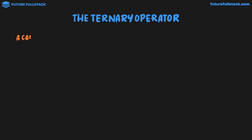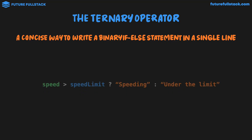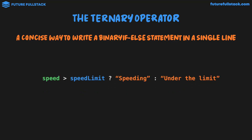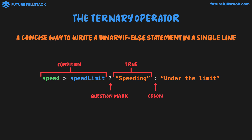The ternary operator is a concise way to write a binary if-else statement in a single line. On the far left, we have our condition — this is checking if the speed is greater than the speed limit. We then have a question mark, which you can think of as asking the question: is the speed greater than the speed limit? This is then followed by our true outcome — in this case, the string 'speeding'. We then have a colon, which separates the true outcome from the false outcome, which in this case is the string 'under the limit'.